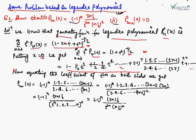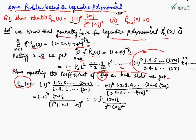Now equating the coefficient of t^(2n) on both sides: on the left side, replacing n by 2n, the coefficient of t^(2n) gives P₂ₙ(0). On the right side, the coefficient of t^(2n) is (−1)ⁿ · [1·3·5···(2n−1)] / [2·4·6···2n].